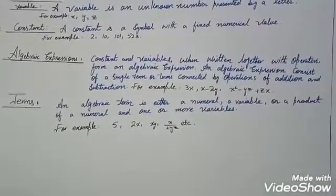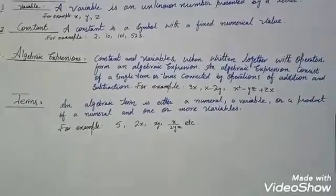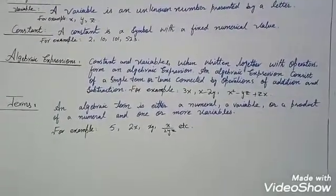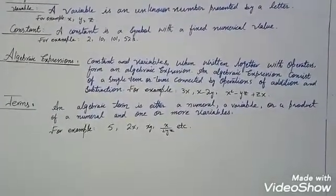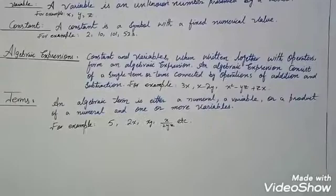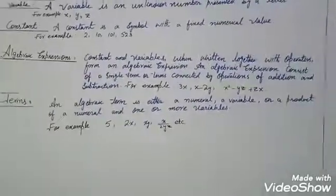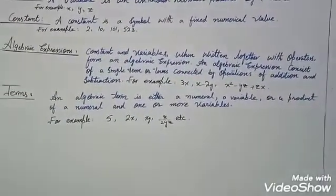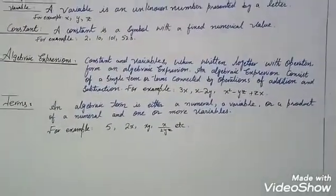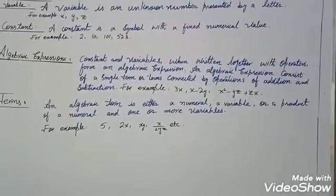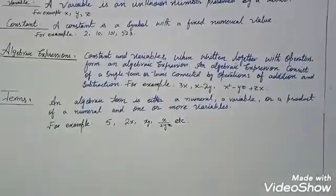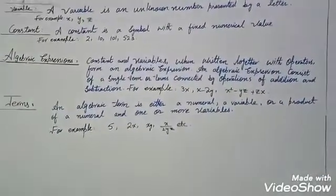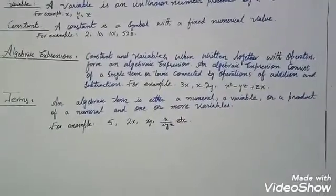Next is constant. A constant is a fixed symbol with a fixed numerical value. For example, 2, 10, 102, 523, 425, 1000 — these are all constants because the value is fixed.